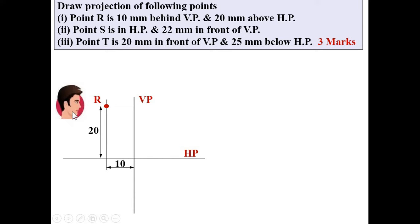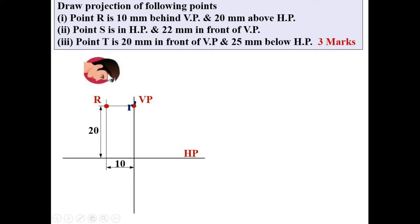Now, consider the position of the observer. If the observer looks from this direction, the projection of point R is on VP - that is called the elevation, sometimes called the front view. Elevation or front view is always denoted with a dash. Since the projection is on VP or HP, it is written with a small letter. So this is small R', with a dash, on VP. Looking from this direction, point R appears here and the position of R' is 20 mm above HP.